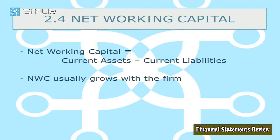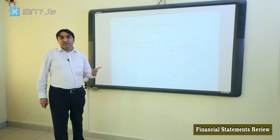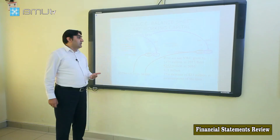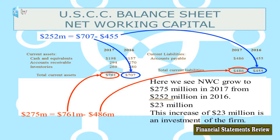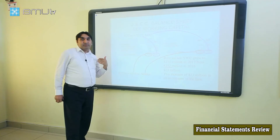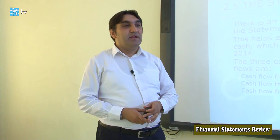In analyzing financial statements, we need to look at net working capital, which is how the company maintains its daily operations — that is current assets minus current liabilities. Net working capital grows with the firm: if the company grows and has higher sales, net working capital will grow as well. For this sample balance sheet, in 2016 we have total current assets of 707 million minus total current liabilities of 455 million, giving us 252 million dollars of net working capital. In 2017, it became 275 million dollars.